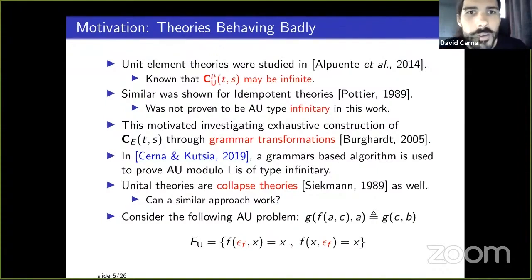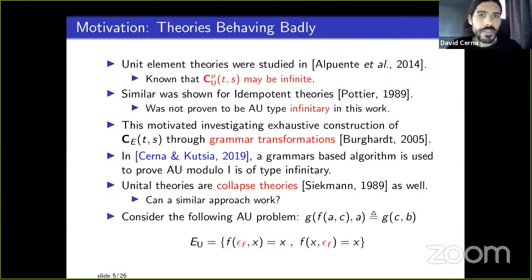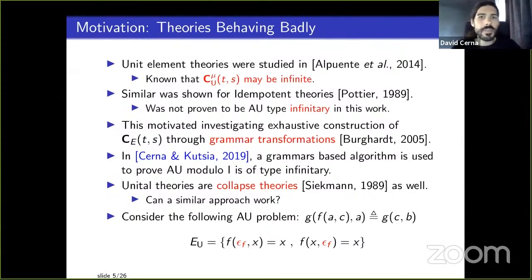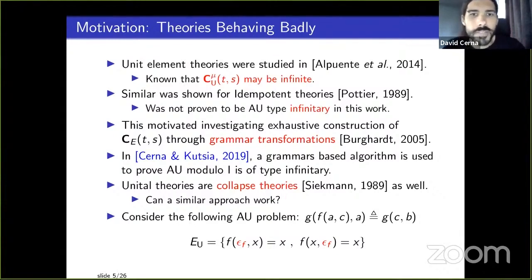The nullary case was shown in earlier work by Taymor with respect to nominal anti-unification, and for equational theories: when you have two or more unit symbols interpreted with a unit element, the complete set is nullary — it doesn't exist. Unit element theories were also studied by Alpuente, and it's known to be infinite with enough unit elements. Similarly for idempotent theories from a technical report by Potier in 1989.